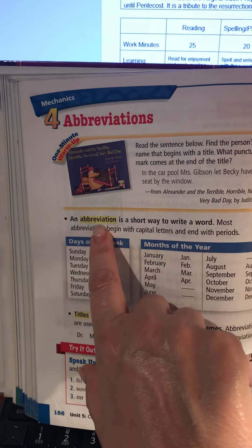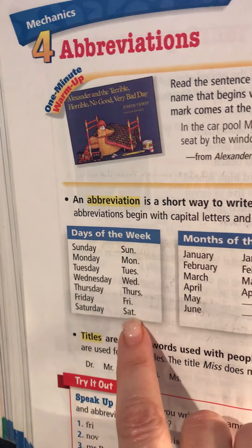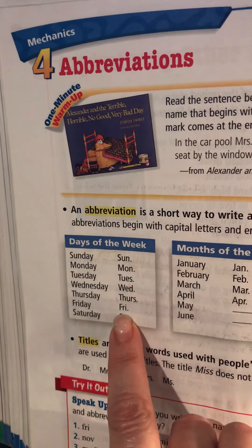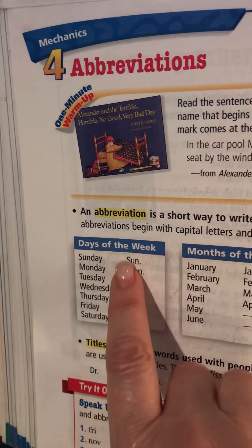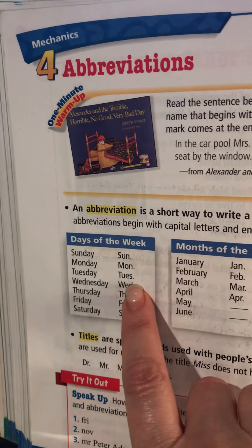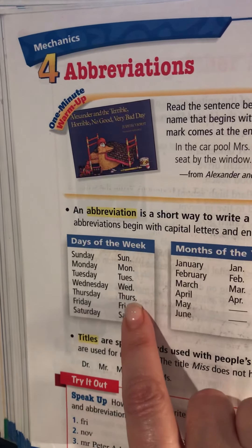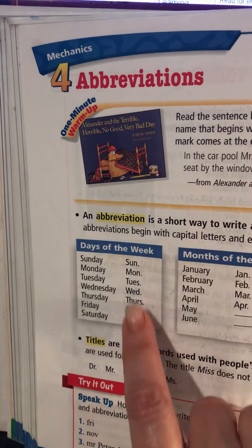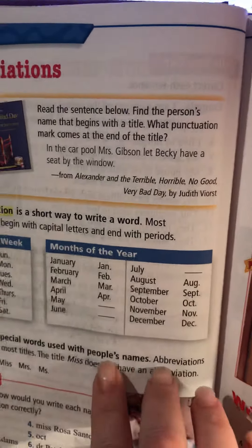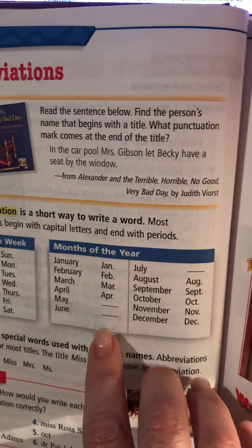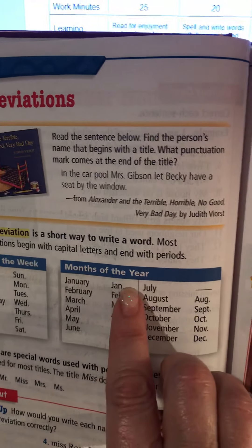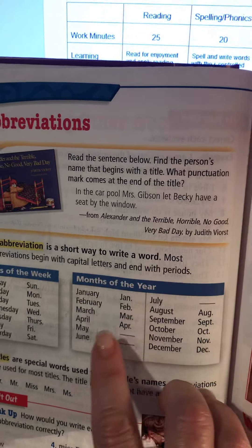We have a chart here that shows the proper abbreviation for Sunday, Monday, Tuesday, Wednesday, Thursday, Friday, and Saturday. Note that you still capitalize the day of the week in English, but you put a period that shows that you've shortened the way to write the word. Please learn these.